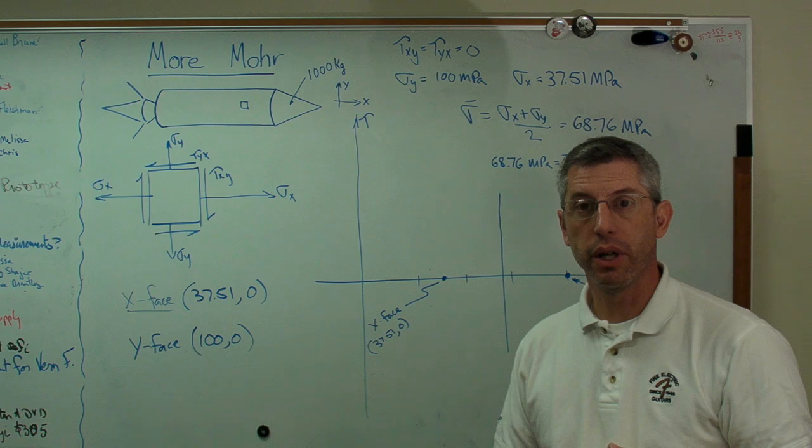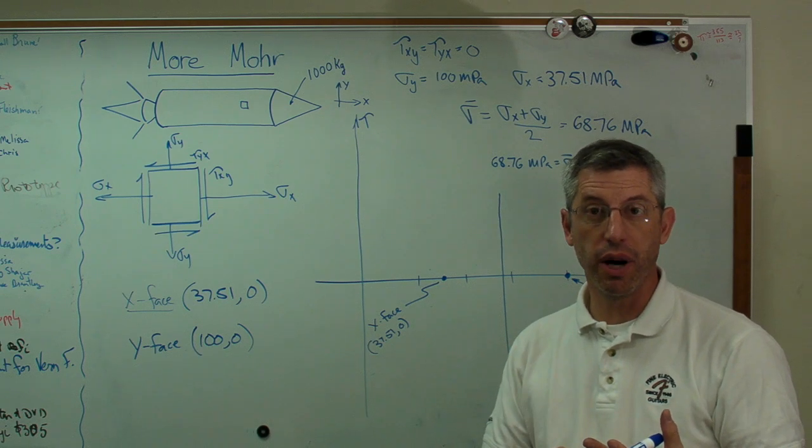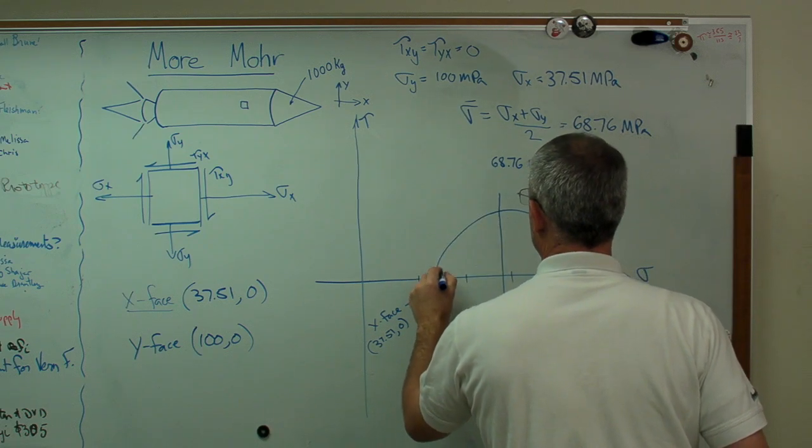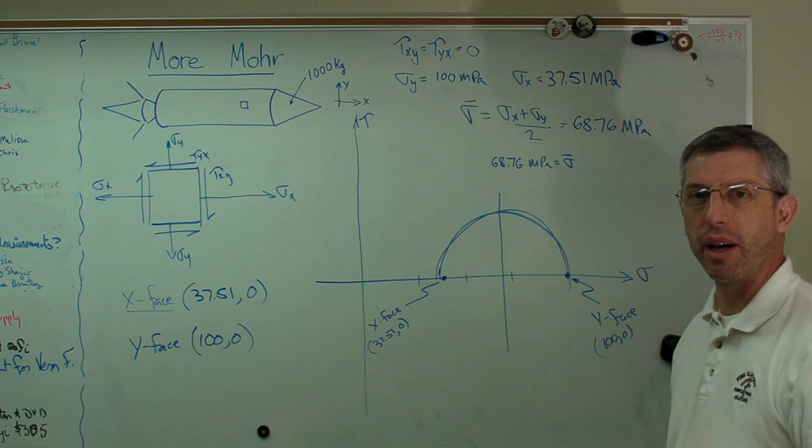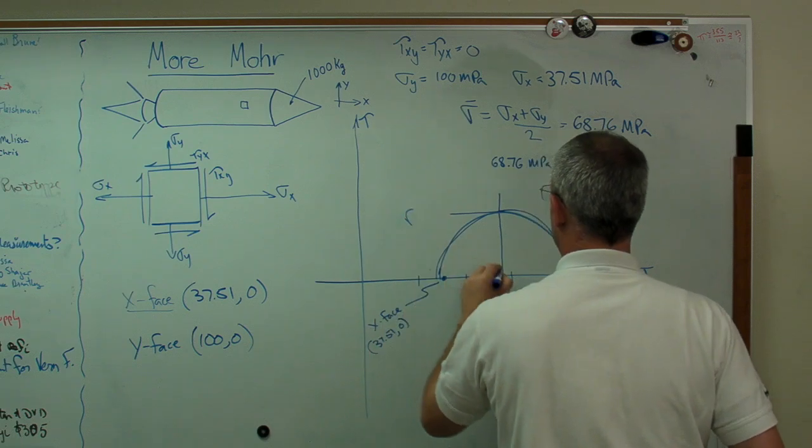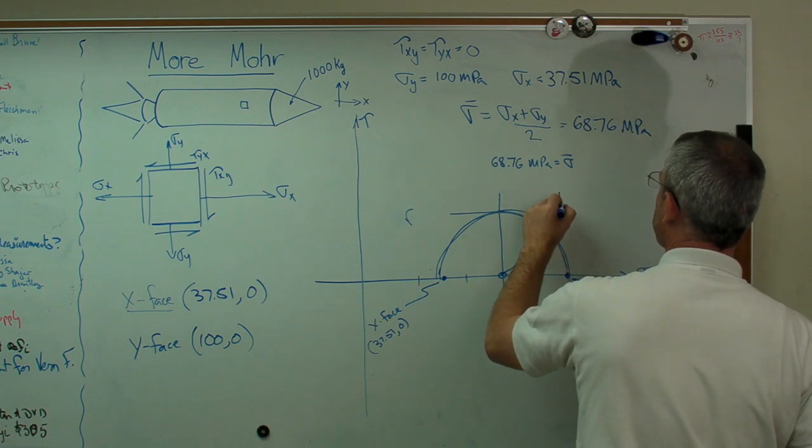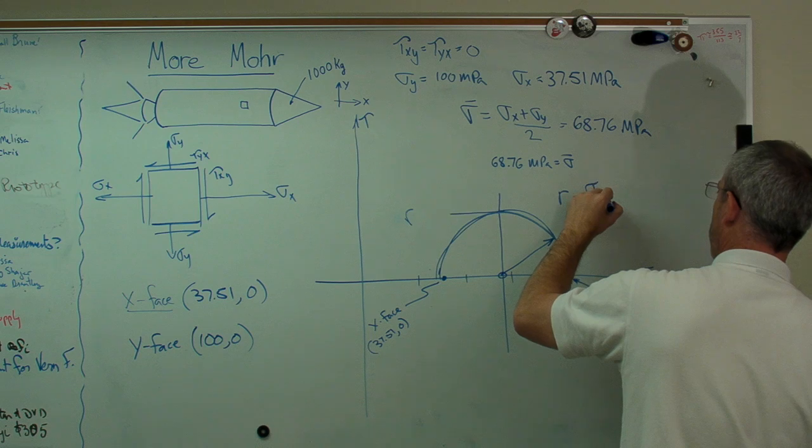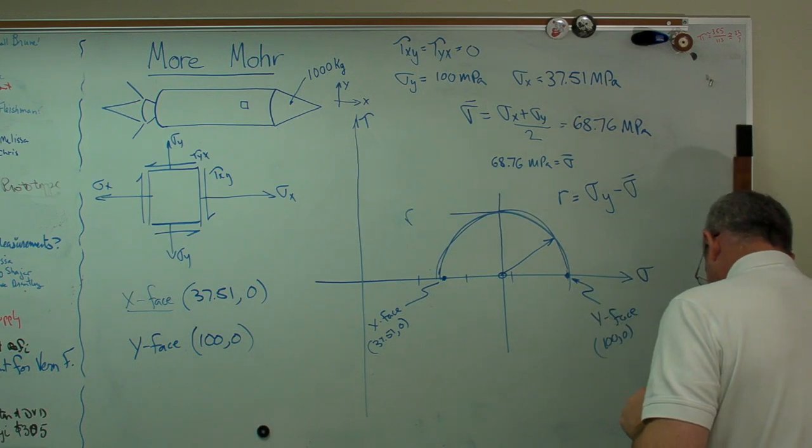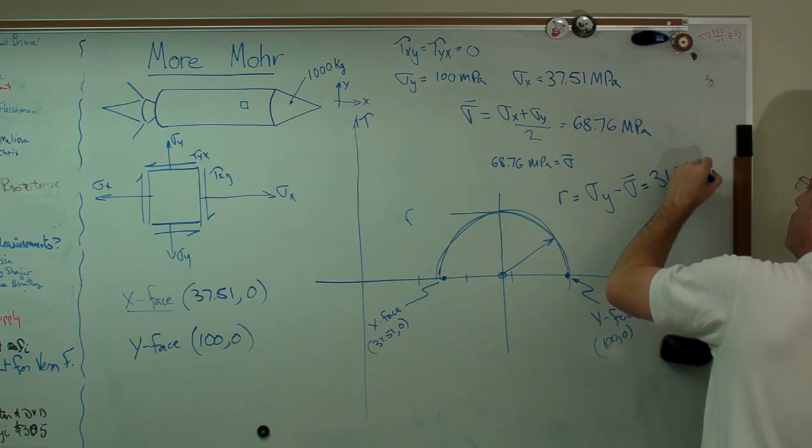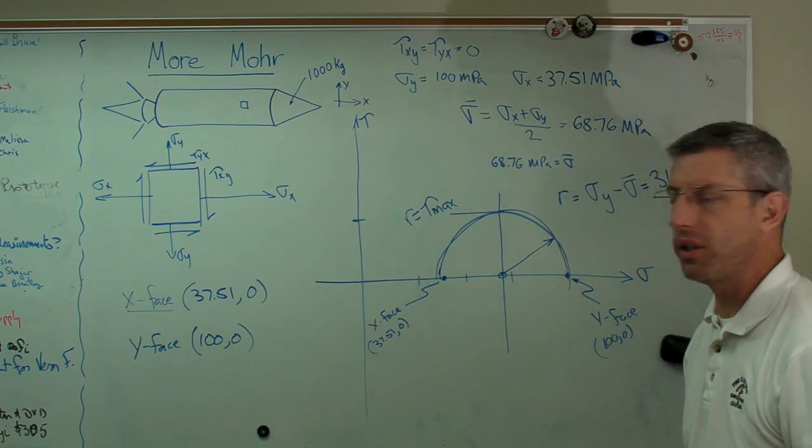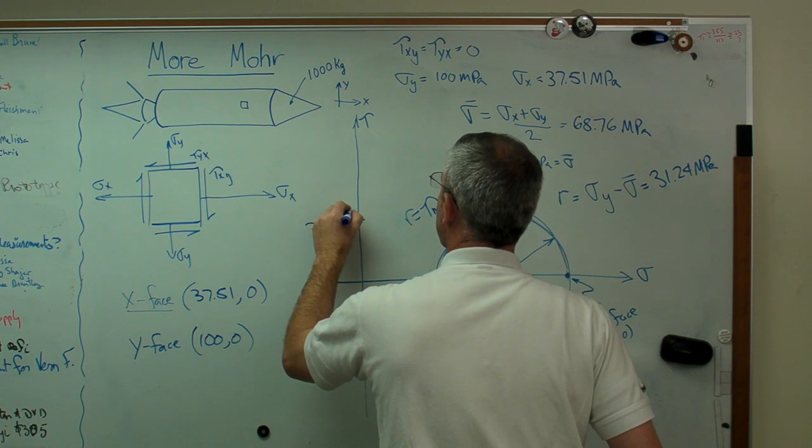Once you know the center of a circle and two opposite points, you know the center of the circle and the radius. Once you know the center and the radius, you know everything there is to know about a circle. I'm going to try to draw this freehand. Right there, that is the radius. The radius is sigma y minus sigma bar in this case. I can get away with this because there's no tau xy. So, my radius is 31.24 megapascals. That's radius. That's also tau max right there. 31.24 megapascals.